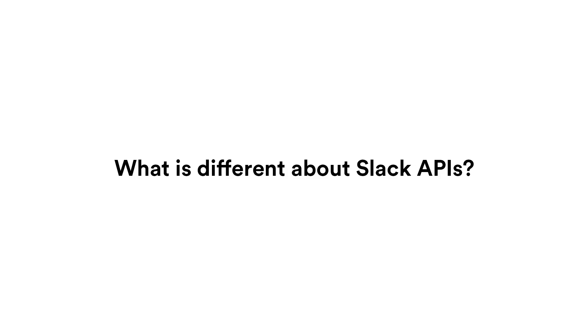If you want to build more robust apps, you're going to need to use Slack's web APIs. Our web APIs use HTTP RPC methods, which are similar to REST methods, but serve slightly different purposes. For example, you can make an API call like chat.postMessage to send a message via HTTP post.